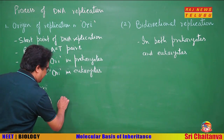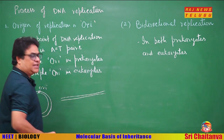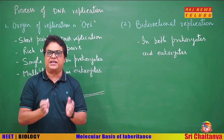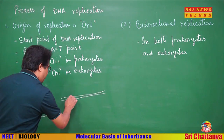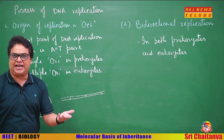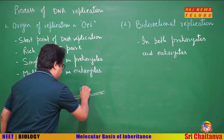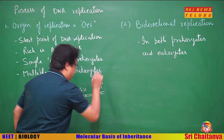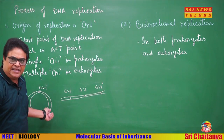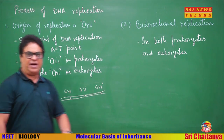In eukaryotes, there is a large amount of DNA that has to be replicated in a short span of time. So in eukaryotes, DNA replication simultaneously starts at many points — eukaryotic DNA has multiple ORI. Remember: bacterial DNA has a single ORI and eukaryotic DNA has multiple ORI.